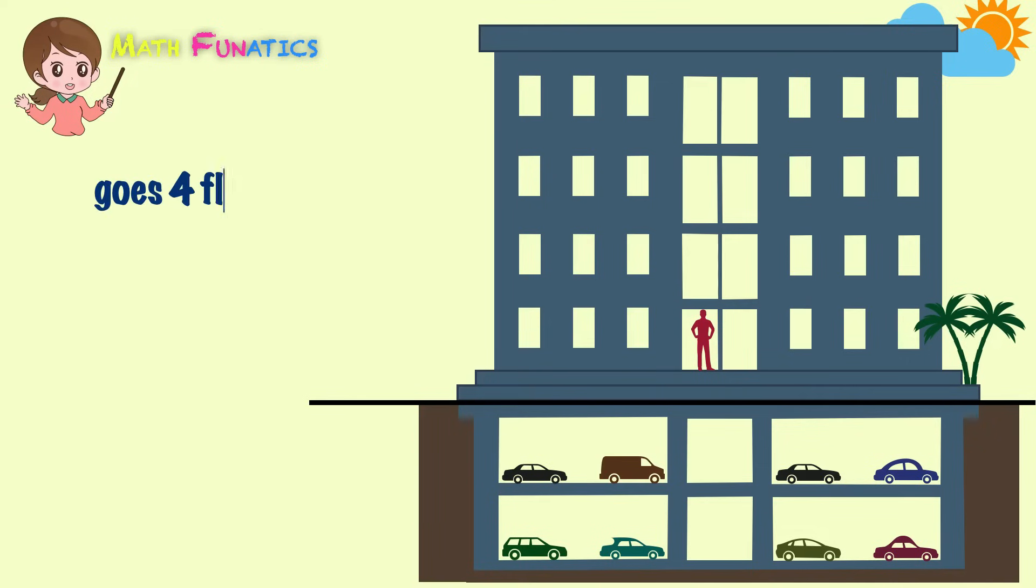So if the man goes 4 floors up the building, then it may be represented by positive 4 or 4. But if he goes 2 floors down the building, then it is negative 2 that best represents his action.